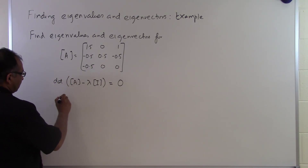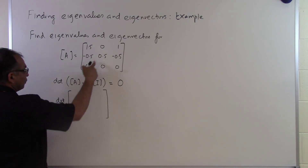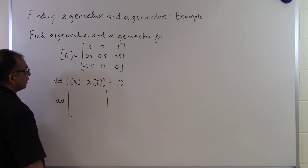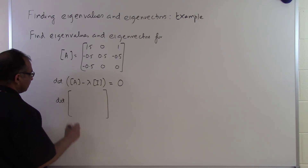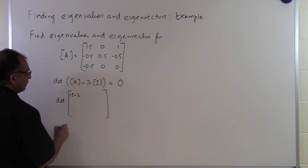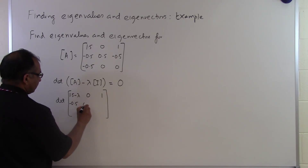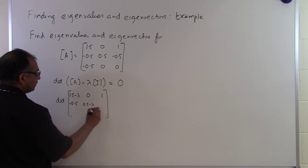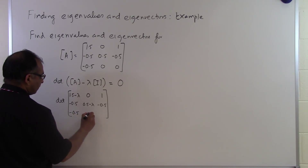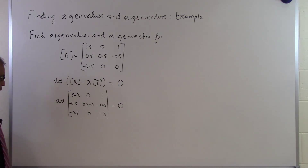So what that means is I'm going to get the determinant of this matrix — the A matrix but with minus lambda added to each of the diagonals. So we've got: 1.5 minus lambda, 0, 1, minus 0.5, 0.5 minus lambda, minus 0.5, and then minus 0.5, 0, and minus lambda. The determinant of this has to be equal to 0.